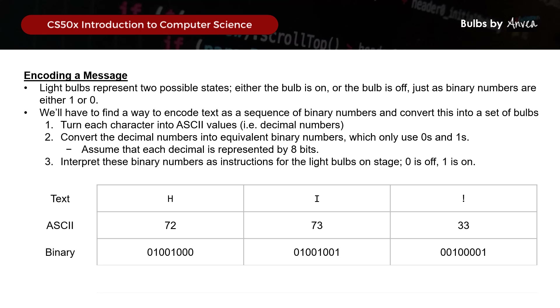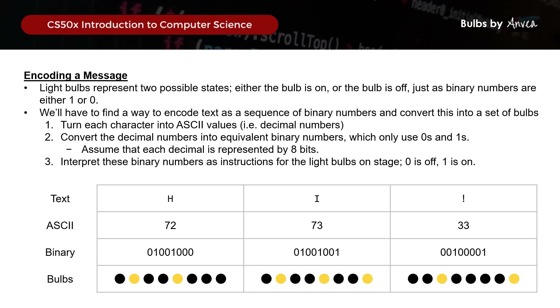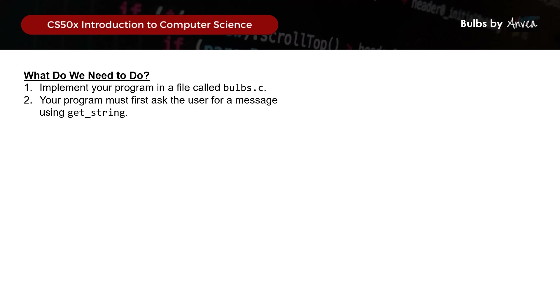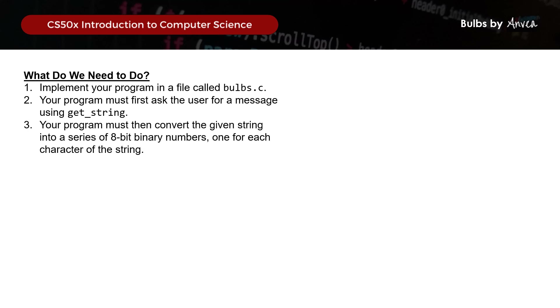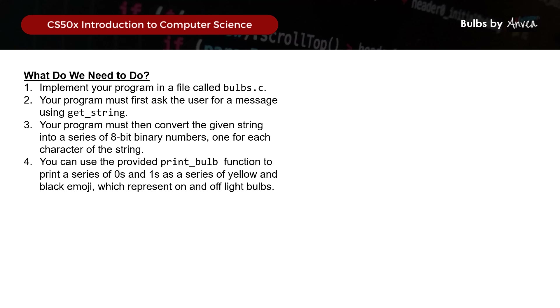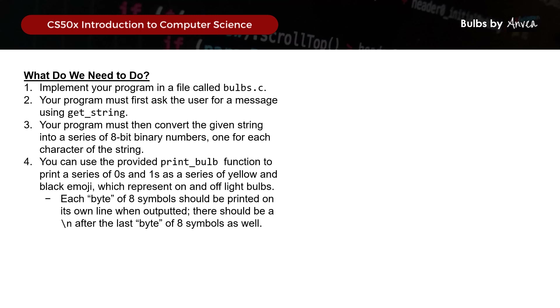We will interpret these binary numbers as instructions for light bulbs, where 0 means the light bulb is off and 1 means the light bulb is on. So we need to implement a program called bulbs, prompt the user for a message using getString, and the program will convert the string into a series of 8-bit binary numbers with one for every character. We'll use the printbulb function to print a series of 0s and 1s as yellow and black emoji representing bulbs on and off. Each byte of 8 symbols should be printed on its own line.